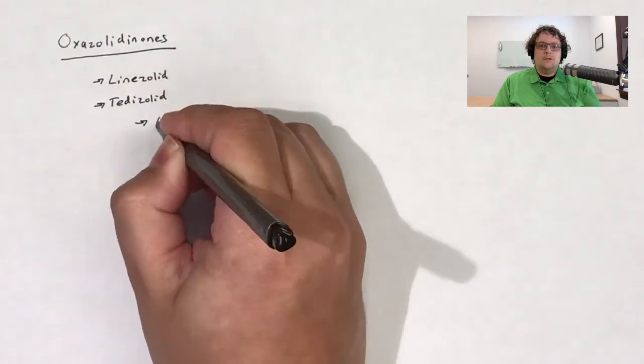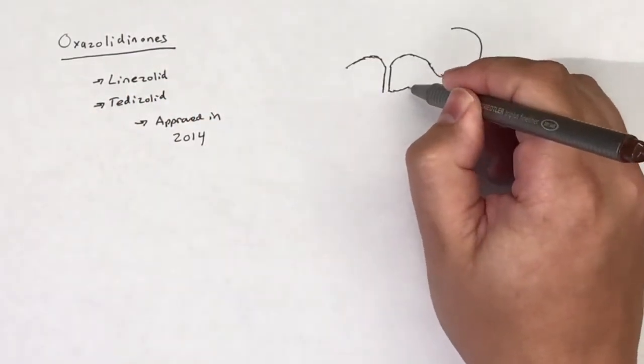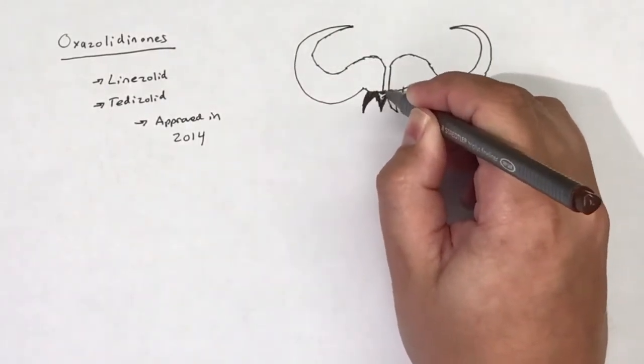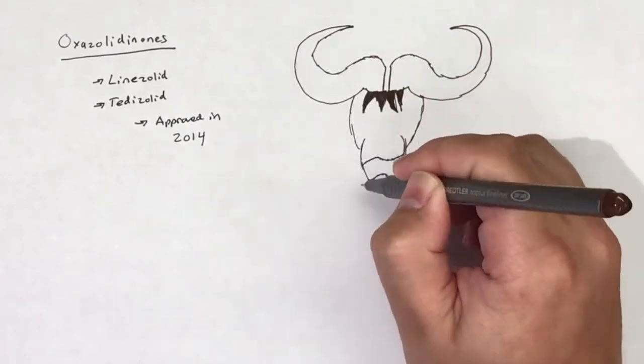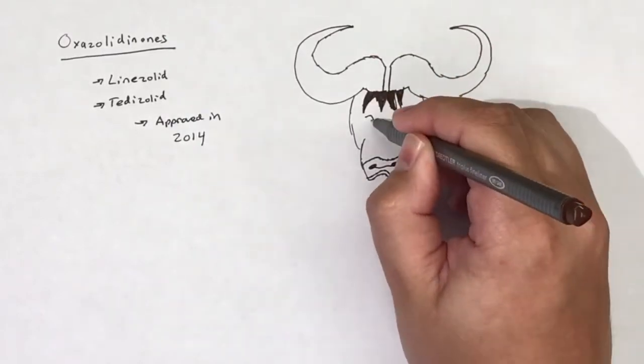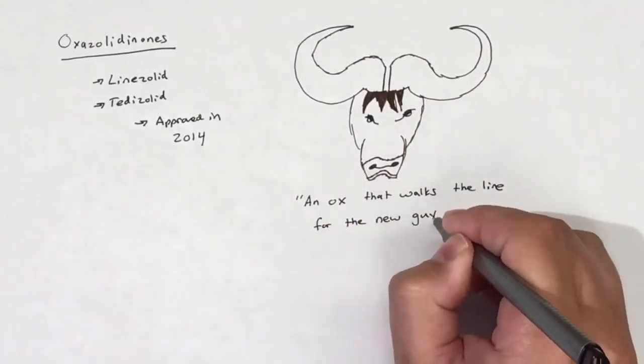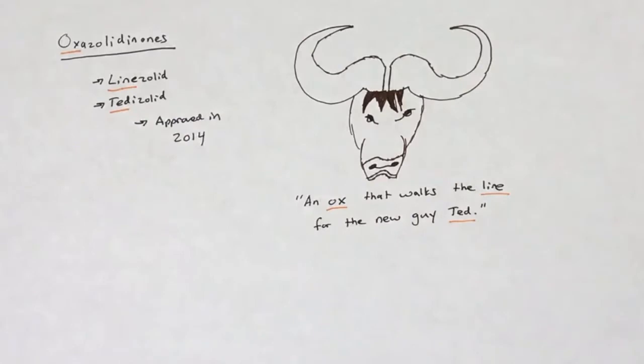Oxazolidinones are protein synthesis inhibitors and represent a relatively newer class of antibiotics. Linezolid is the first drug of this class, followed by tedizolid, approved by the FDA in 2014. As a class, oxazolidinones act primarily against gram-positive organisms. We'll dive into the exact spectrum a bit later in the video.